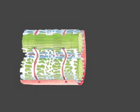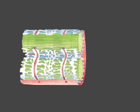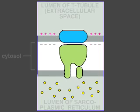Muscle cells have an elaborate architecture that allows them to distribute calcium ions quickly throughout the cytosol. Deep tubular invaginations of the plasma membrane, called T-tubules, crisscross the cell. When the cell is stimulated, a wave of depolarization — that is, an action potential — spreads from the synapse over the plasma membrane and via the T-tubules deep into the cell.